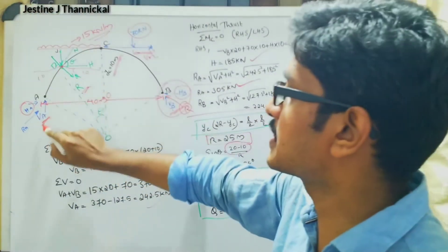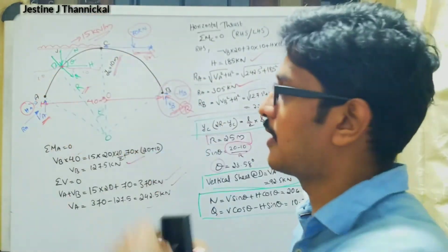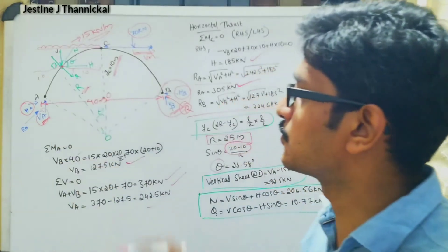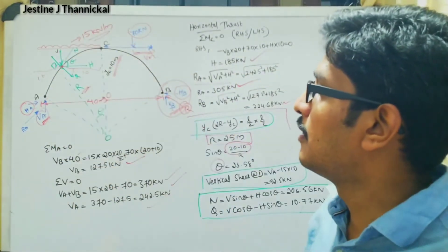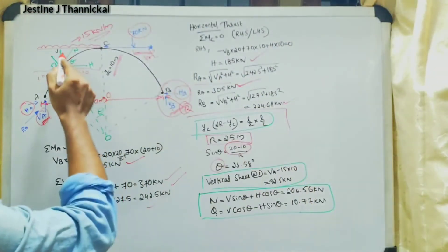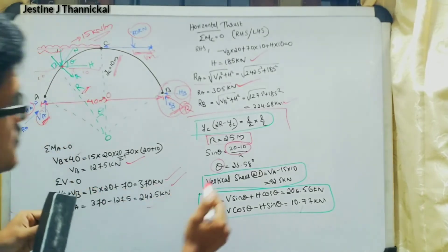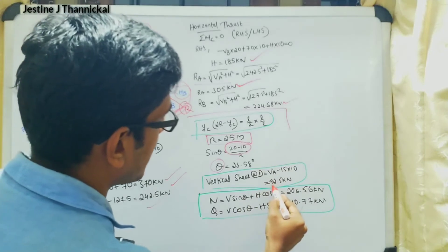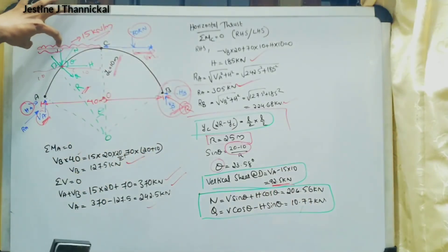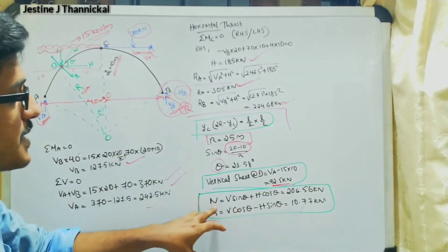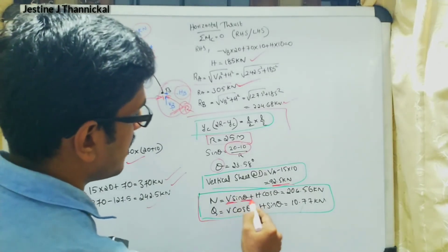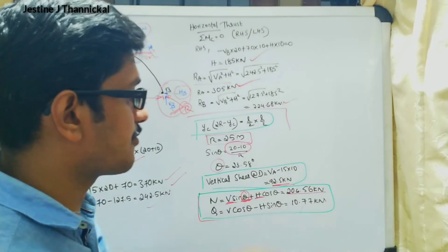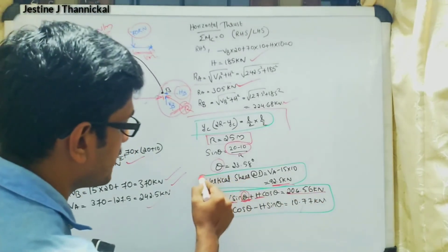To find the vertical shear at section D, we consider all forces acting on the left-hand portion. VA acts upward and the UDL of 15 kilo Newton per meter over 10 meters acts downward. So the vertical shear at D equals VA minus 15 multiplied by 10. Substituting the known values of vertical shear, horizontal thrust H, and theta into the normal thrust and radial shear formulas, we get the normal thrust and radial shear value of 10.77 kilo Newton.